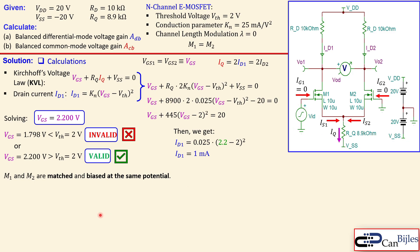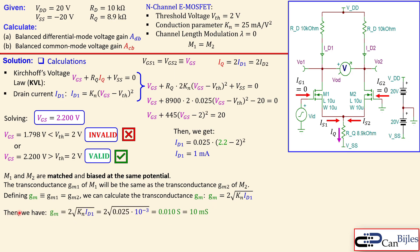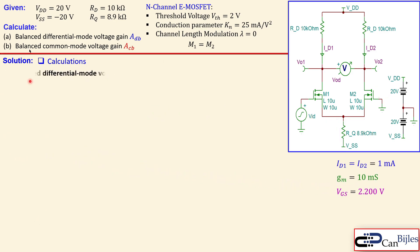As said before, M1 and M2 are matched and biased at the same potential. The transconductance GM1 will be the same as the transconductance of M2. We define GM equal to GM1 equals GM2. We can calculate GM for the n-channel enhancement MOSFET using this formula, which is 2 times the square root of the conduction parameter times drain current. If we use the KN given and ID1 calculated, we have 0.010 Siemens or 10 millisiemens.